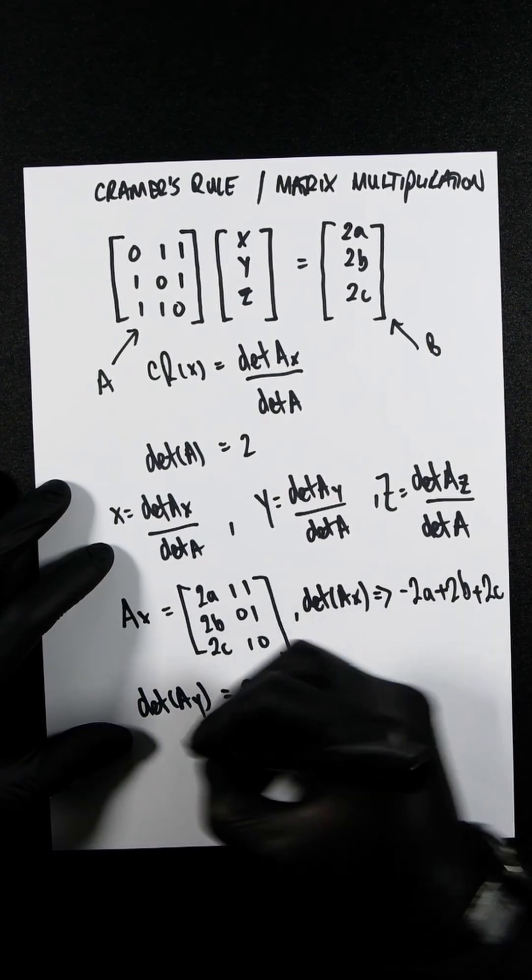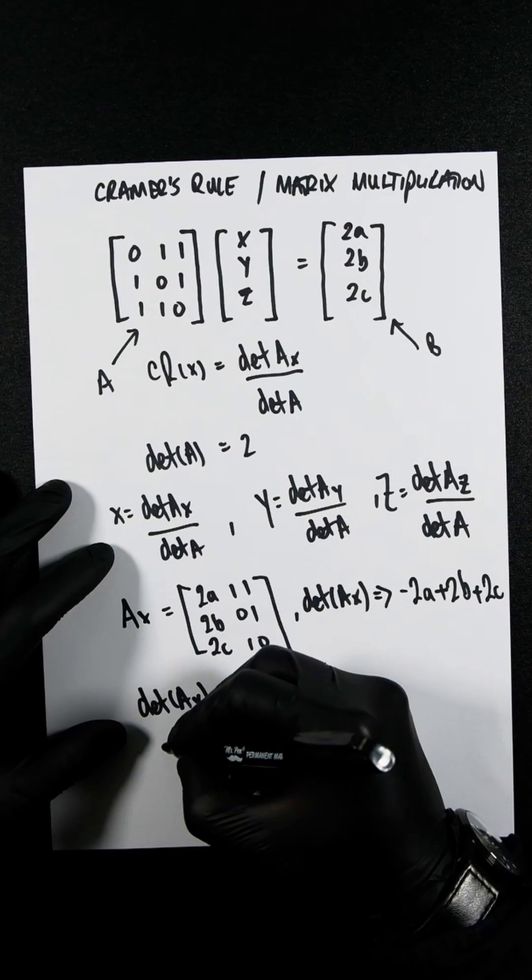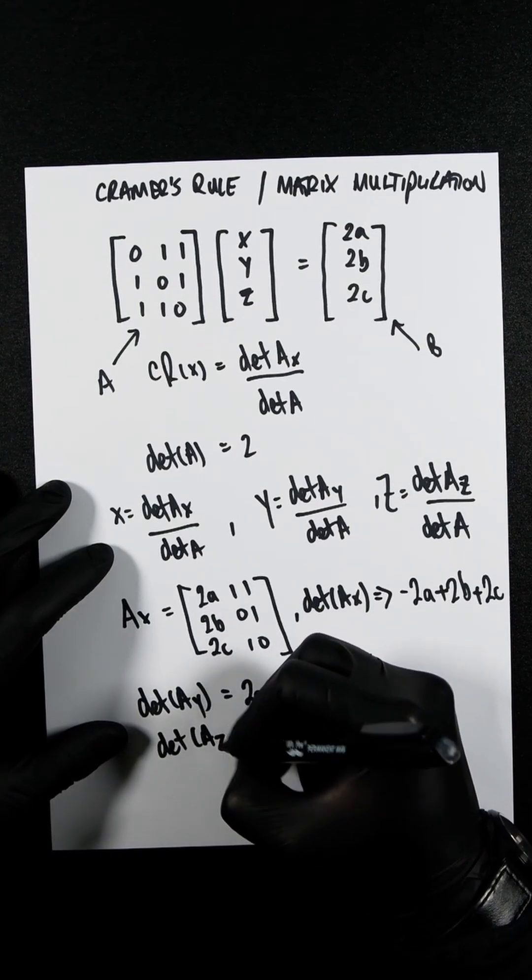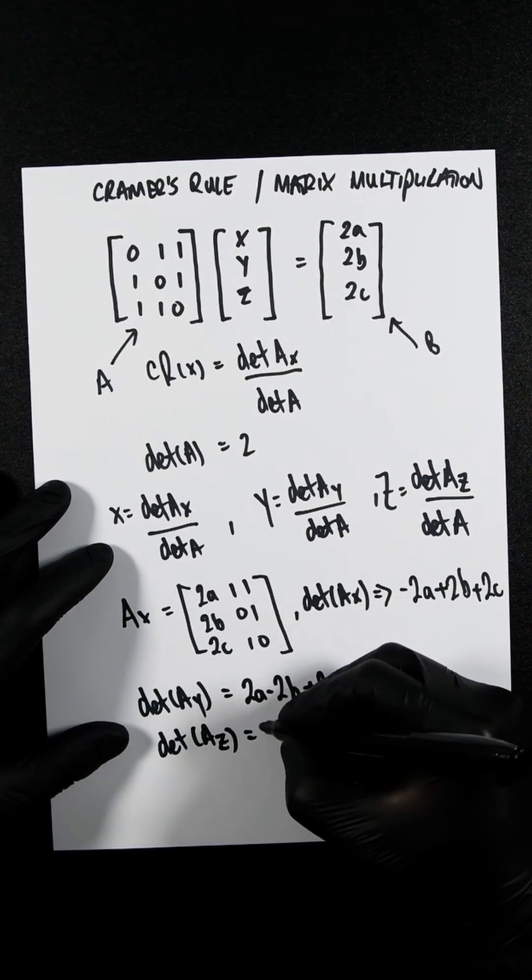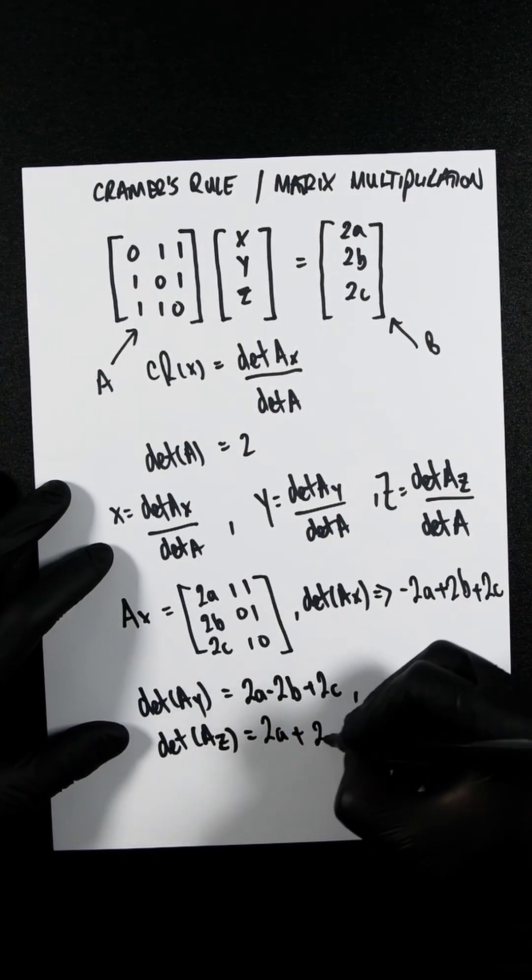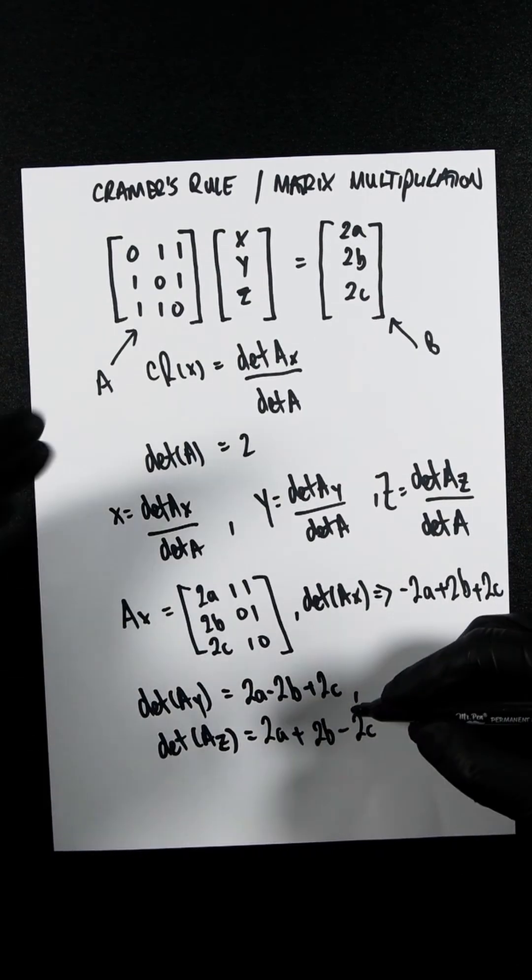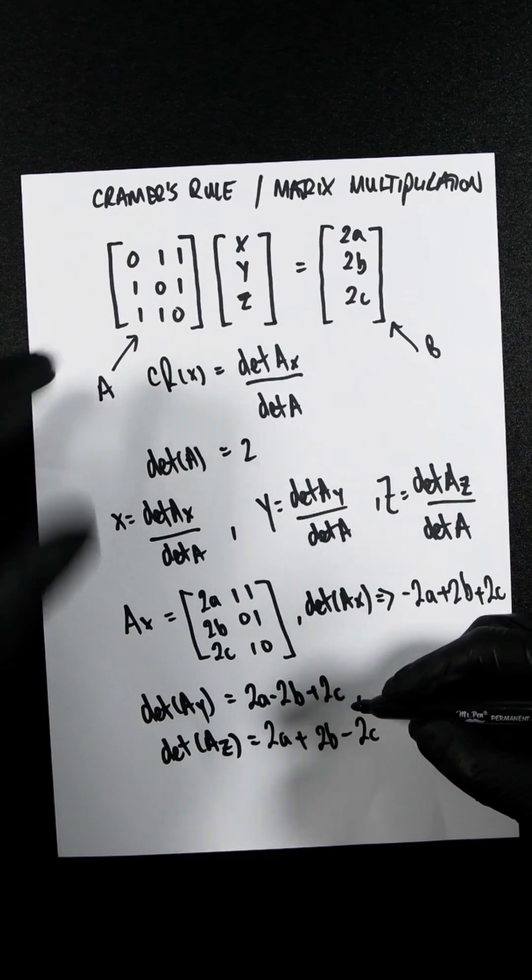And then you'll have the determinant of Az, which is going to be 2A plus 2B minus 2C.